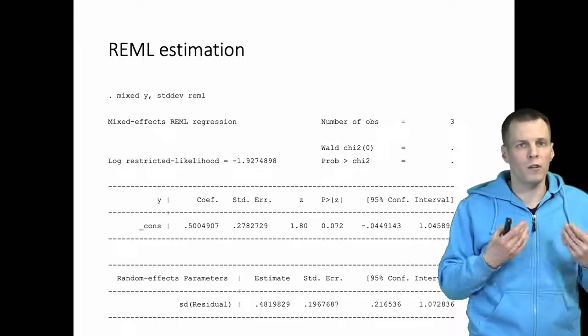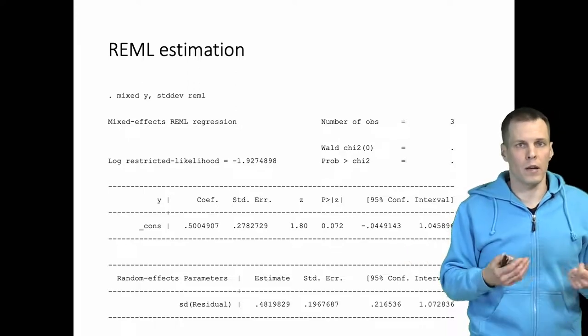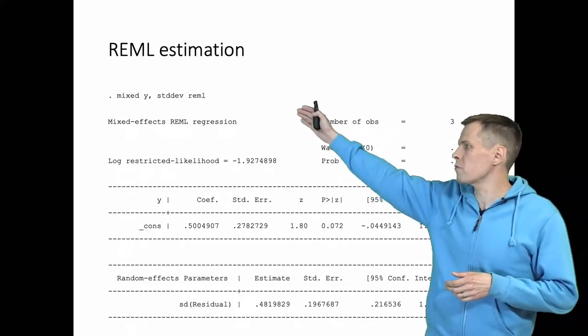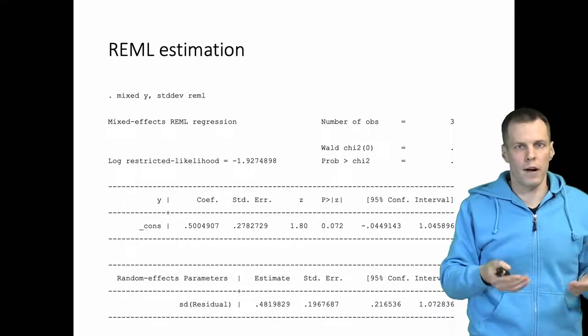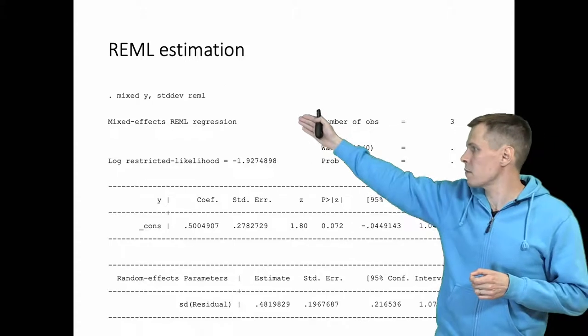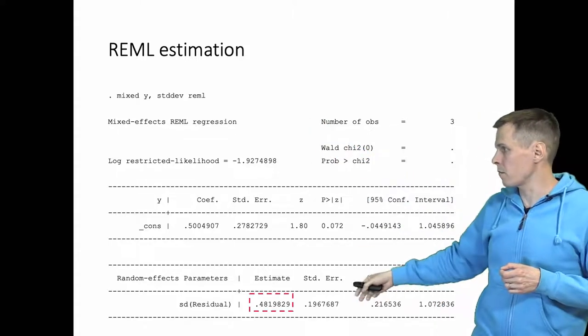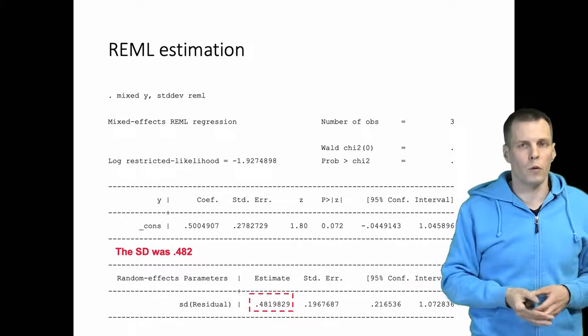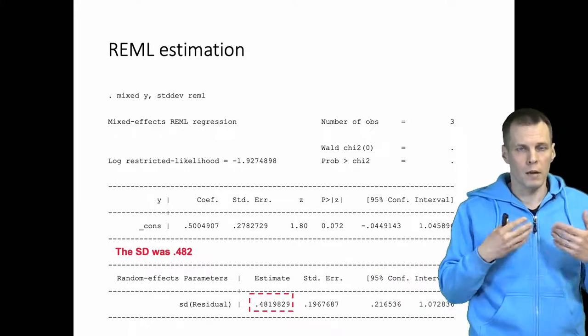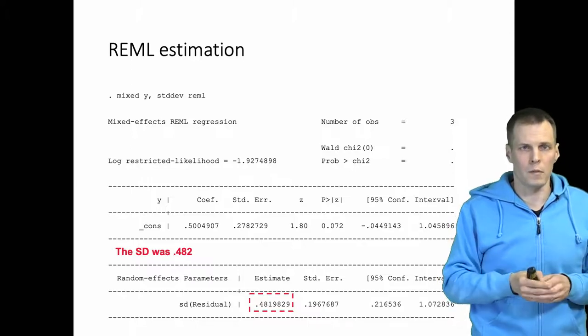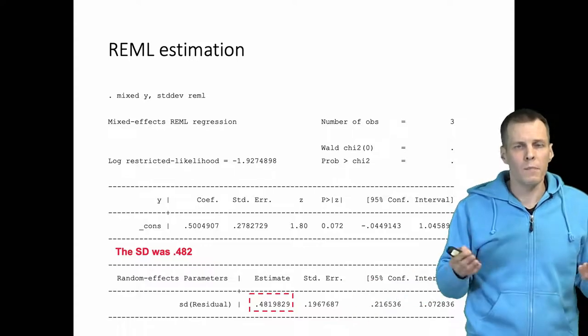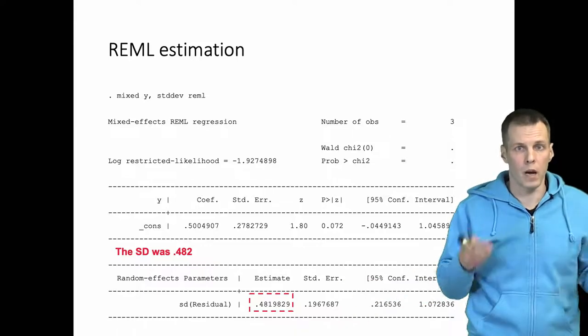We have, fortunately, an alternative estimation technique called REML, or restricted maximum likelihood. This restricted maximum likelihood estimation basically corrects for the bias in the variance components of the maximum likelihood estimate. If we apply REML estimation here, we get the estimate 0.481, and that is what our sample value was. The sample standard deviation is an unbiased estimator of the population quantity. So this gives us less biased estimates than maximum likelihood estimates.